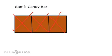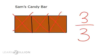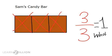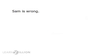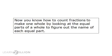If he gives away three thirds, or three out of his three total pieces, he has given away his whole candy bar. The numerator is three because that is the part we are thinking about — the three pieces that he gives away. And three is the denominator because that is the total number of parts that makes up the whole candy bar. Three over three, or three thirds, equals one whole. Sam is giving away his whole candy bar and will not have a piece left over for himself. Sam is wrong. Now you know how to count fractions to make one whole by looking at the equal parts of a whole to figure out the name of each equal part.